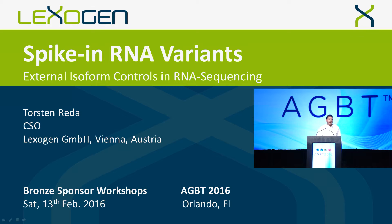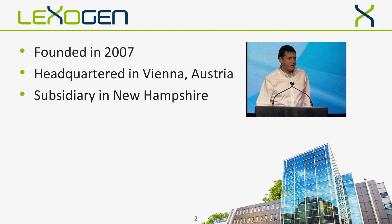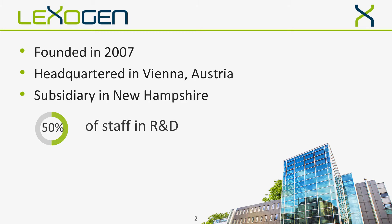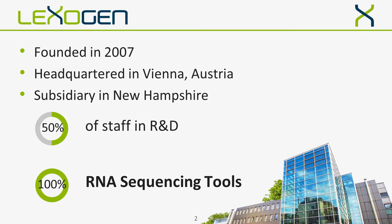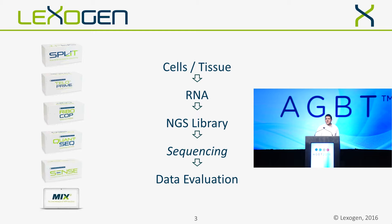Good day, everyone. My name is Torsten Reda. I'm the CSO from Nexogen. The company was founded in 2007, and our base is in Vienna, Austria. Since 2014, we have a subsidiary here in the United States. 50% of our staff is working in research and development, and the entire team is dedicated to RNA. This enabled us to build up the entire workflow for RNA sequencing and provide a comprehensive portfolio of RNA sequencing tools, from isolation of RNA from cells and tissues up to the data evaluation pipeline — except the sequencing itself. The products of Lexogen are platform open.